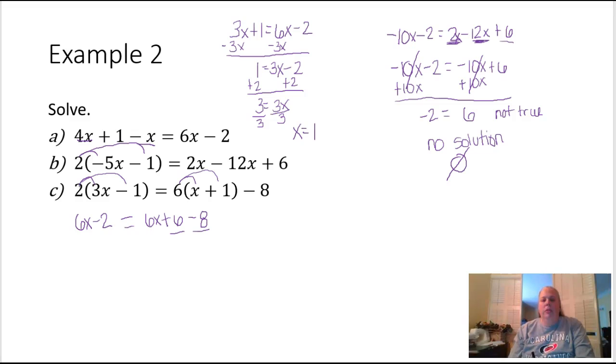Let's add our like terms. We've got 6x minus 2 equals 6x minus 2. Well, I have the same thing on both sides of the equal sign. This is a true statement, and that means that this equation has all real numbers as a solution.